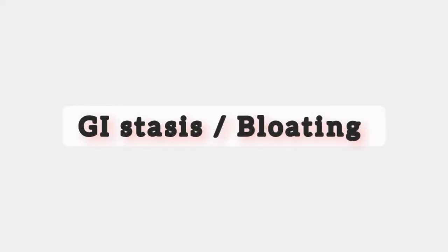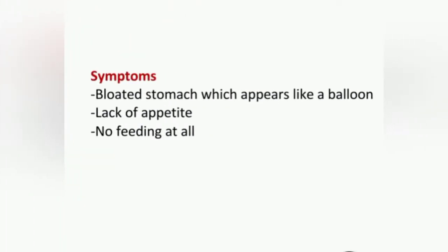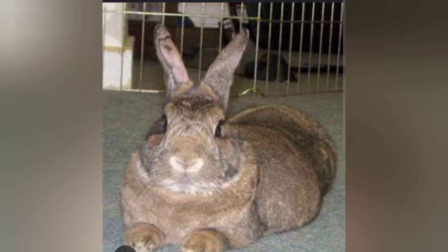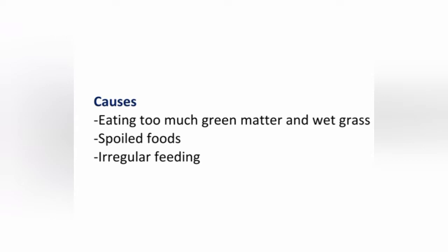The fourth common disease is called GI stasis, or bloating. It is characterized by a bloated stomach which appears like a balloon, lack of appetite, and no feeding at all. This disease is caused by too much eating of green food, wet grass, moldy foods, spoiled foods, and also irregular feeding.